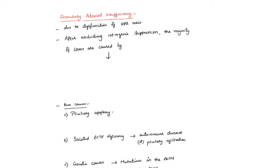Coming to secondary adrenal insufficiency: it is because of decreased ACTH secretion from the pituitary, or decreased CRH secretion from the hypothalamus. So it is basically because of dysfunction of the hypothalamic-pituitary-adrenal axis.